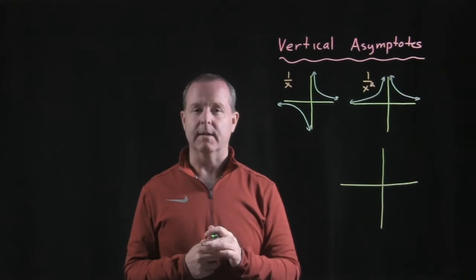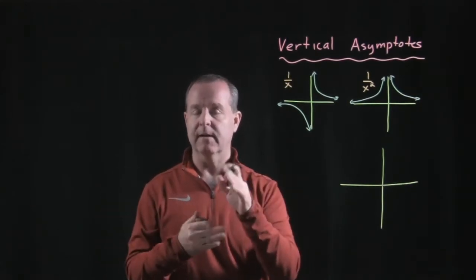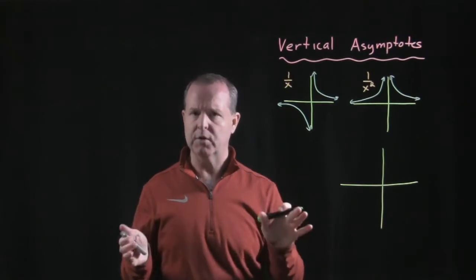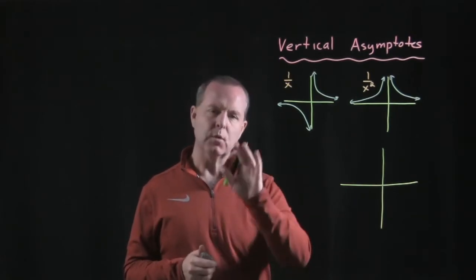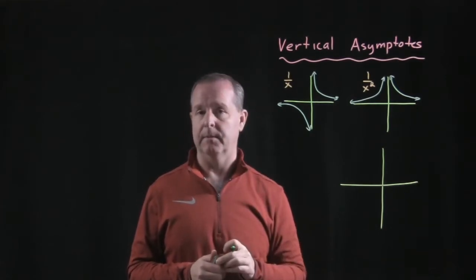Now, you may have noticed on the last couple of examples that there was a point where the graph split. I told you that's where the graph was being divided by 0, where the domain doesn't exist.